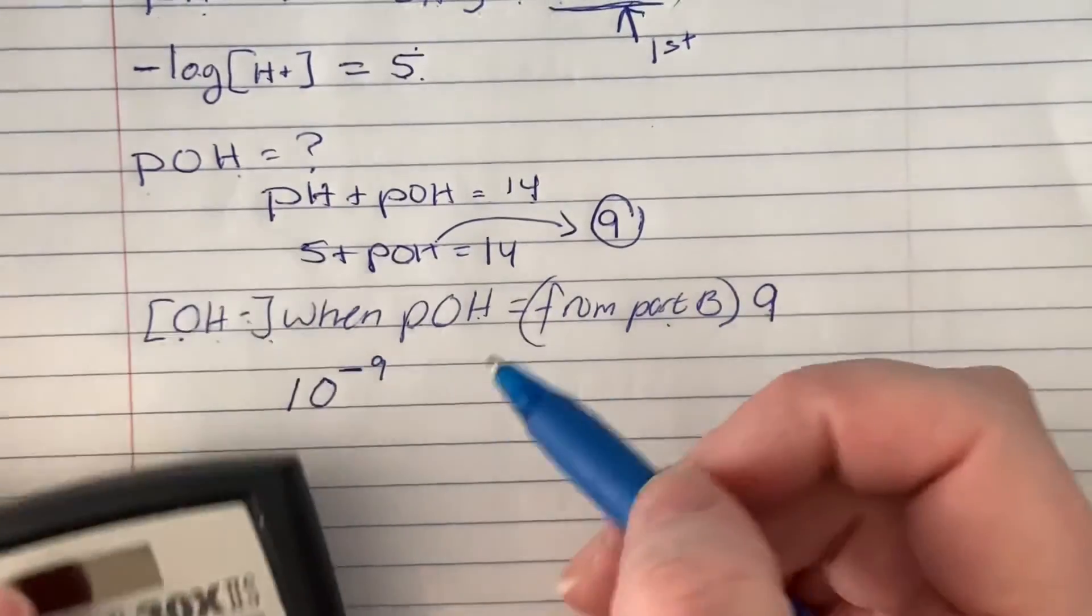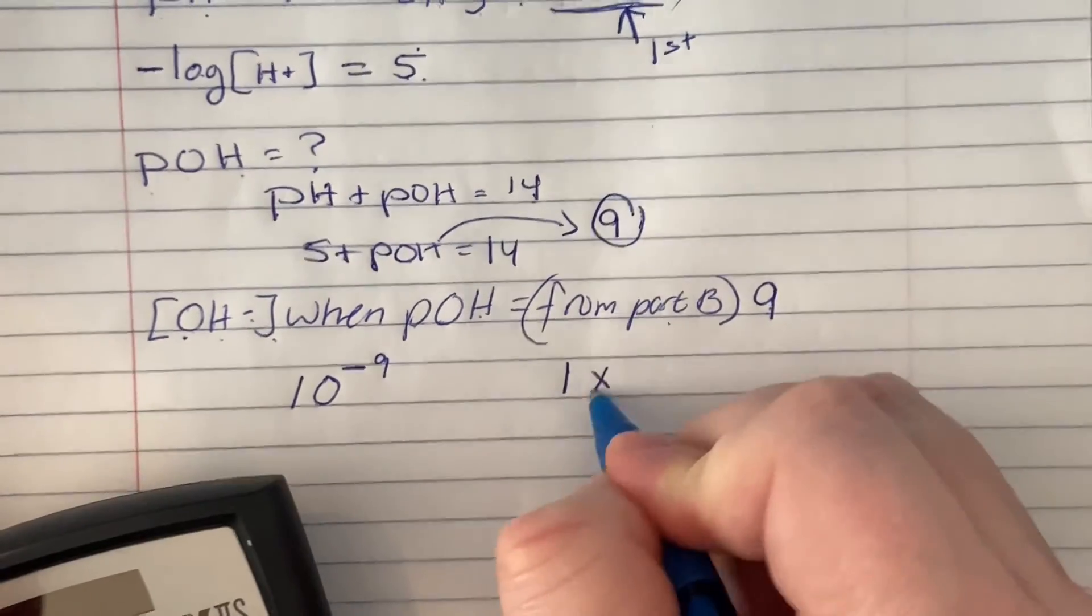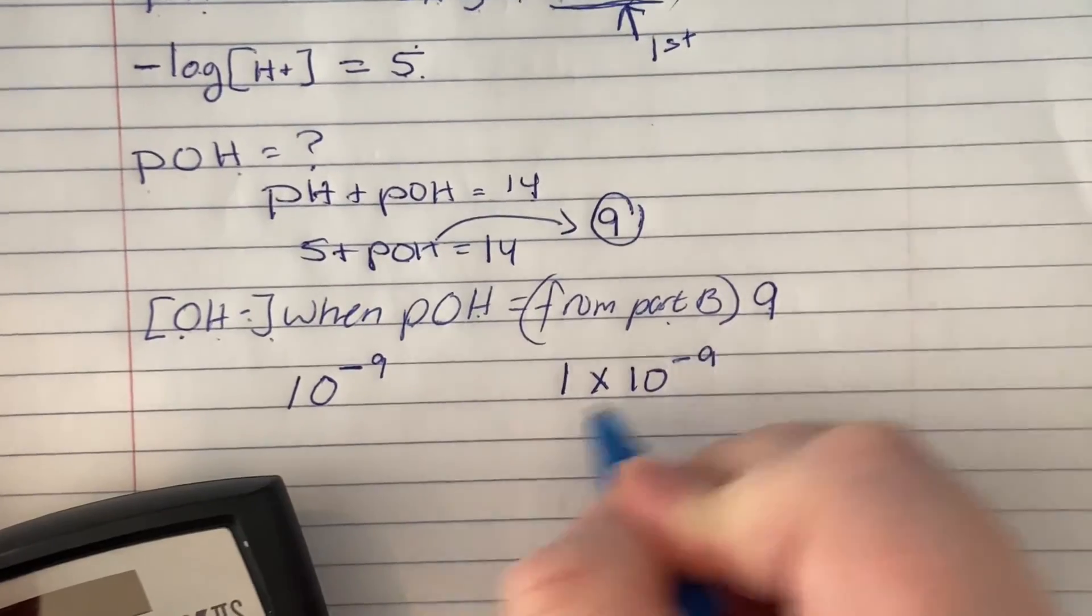And so in this case, 10 to the negative 9, you can just say, if you want scientific notation, 1 times 10 to the negative 9.